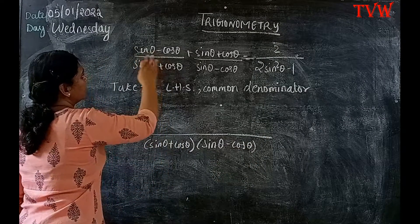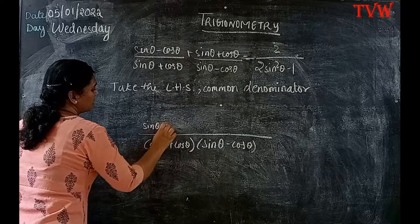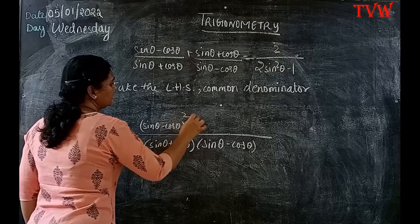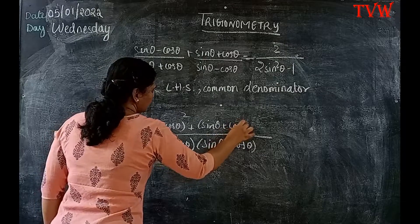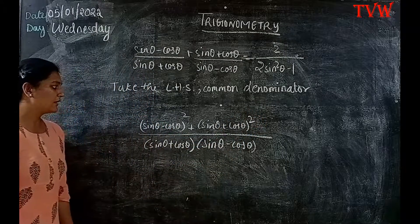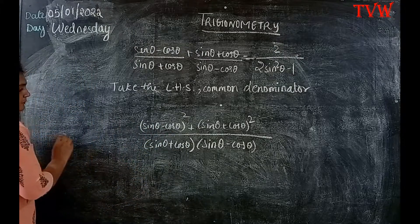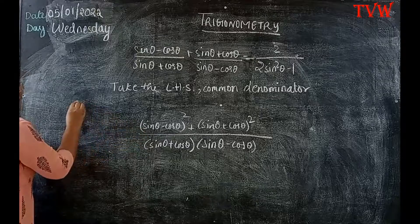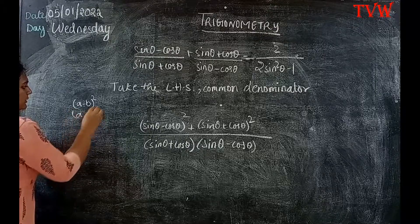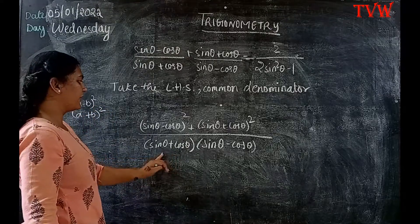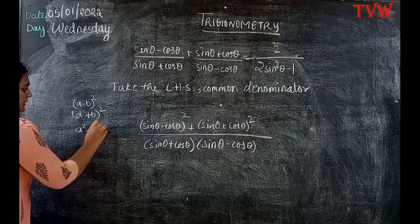In the numerator it will be (sin θ − cos θ)² + (sin θ + cos θ)². In the numerator I need to use the (a − b)² formula and the (a + b)² formula. In the denominator I have (a + b)(a − b) which is nothing but a² − b².